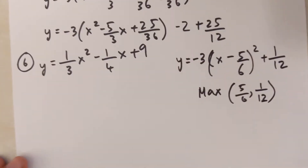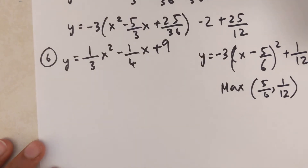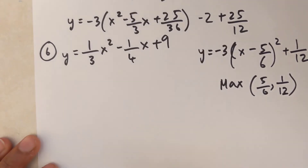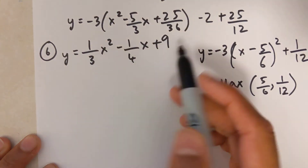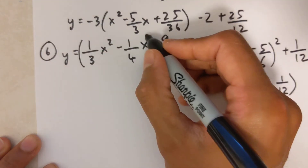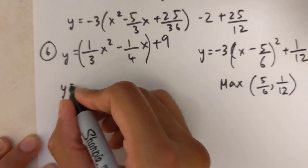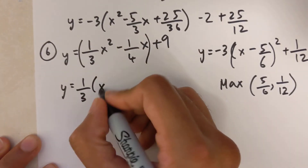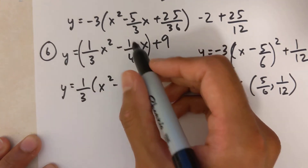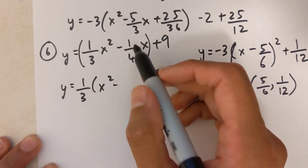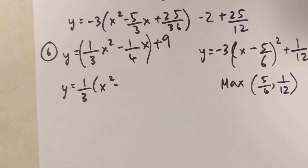For the final and hardest example we have fractions in the original equation. I start with a bracket and factor out 1 over 3. To find the coefficient inside the bracket I do negative 1 over 4 divided by 1 over 3 in my calculator, which gives 3 over 4, so the term is negative 3 over 4 x.